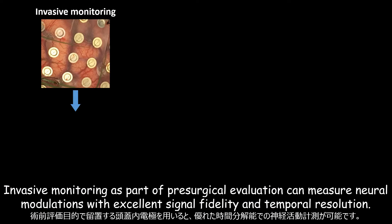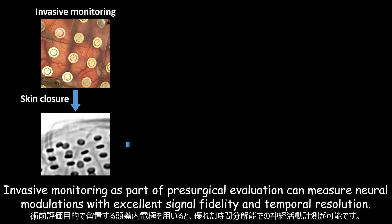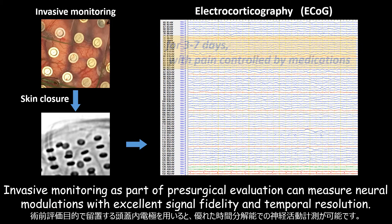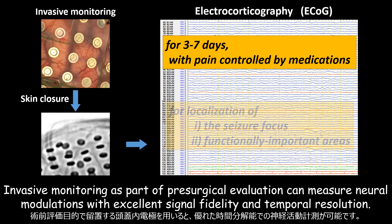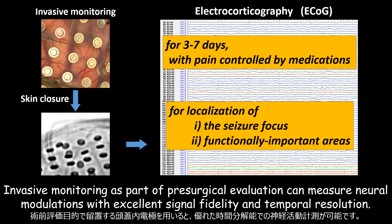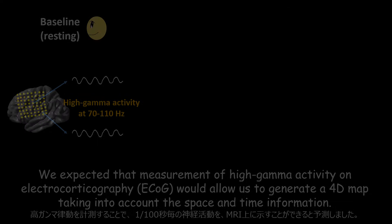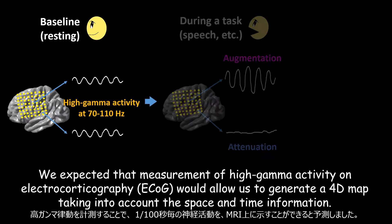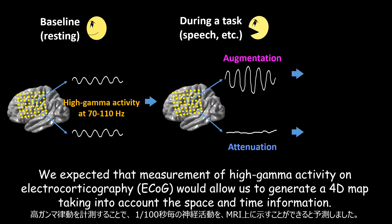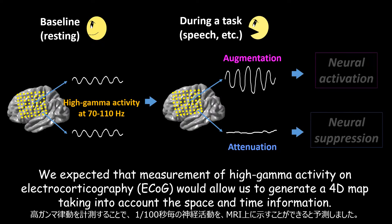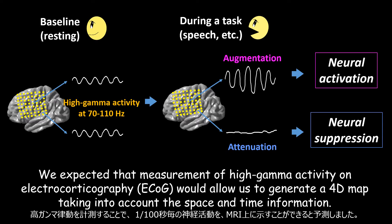Invasive monitoring as part of pre-surgical evaluation can measure neural modulations with excellent signal fidelity and temporal resolution. We expected that measurement of high gamma activity on electrocorticography, also known as ECoG, would allow us to generate a four-dimensional mapping, taking into account the space and time information.